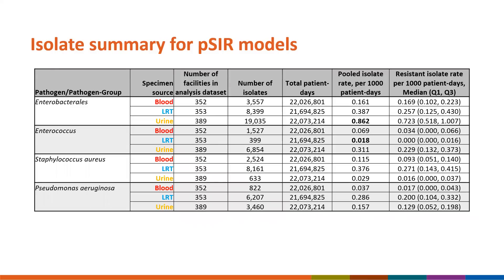The last isolate summary table shows information for PSIR models, with data displayed for Enterobacteriales, Enterococcus, Staph aureus, and Pseudomonas aeruginosa. There is no resistance data here since PSIRs are developed for pathogens or pathogen groups rather than drug-resistant phenotypes. Enterococcus in the lower respiratory tract was the least commonly reported pathogen with a pooled isolate rate of 0.018 isolates per 1,000 patient days, and Enterobacteriales in urine was the most commonly reported with 0.862 isolates per 1,000 patient days.